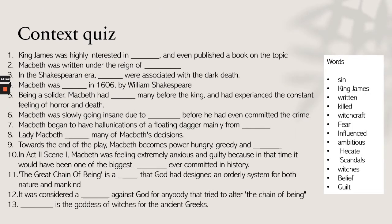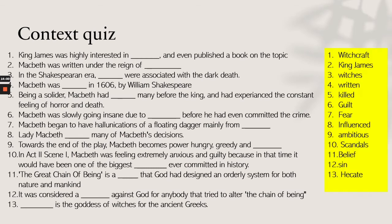I've got a little context quiz. Pause the video and have a go at filling in the blanks — the words are on the right-hand side. The answers in order are: witchcraft, King James, witches, written, killed, guilt, fear, influence, ambitious, scandals, belief, sin, and Hecate. See what you got correct and correct anything you got wrong.